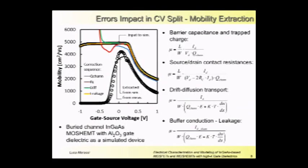We simulated the IV and CV characteristics for the MOSHEMT with alumina gate dielectric. We imposed the mobility - the dotted black mobility - as an input for the simulation. Then once we obtained the IV and CV, we extracted the mobility. The mobility extracted is actually different from the imposed one. Only if we consider and correct the equation considering all the error sources listed near the picture, is it possible to correctly extract the real value of the mobility in the channel.